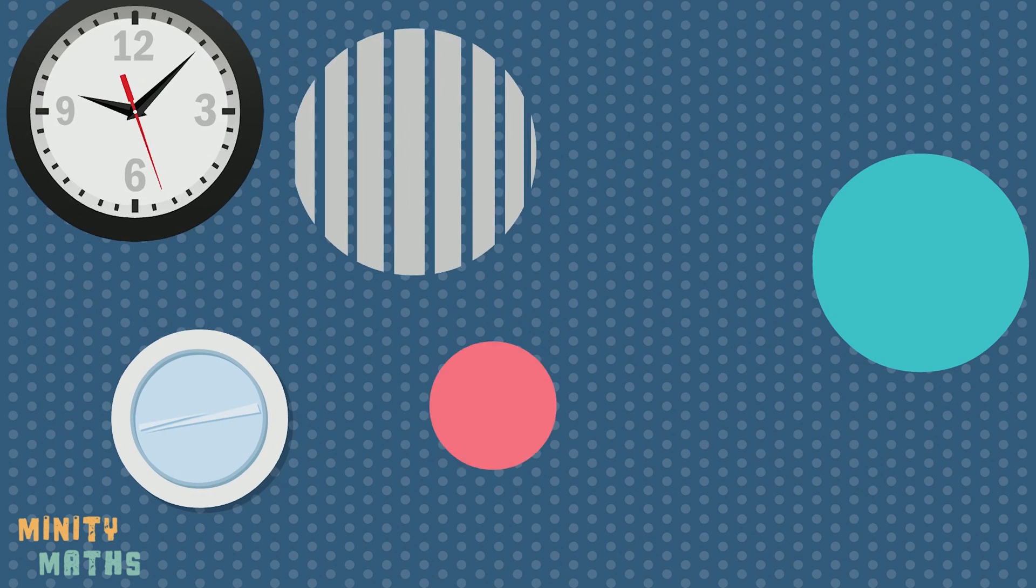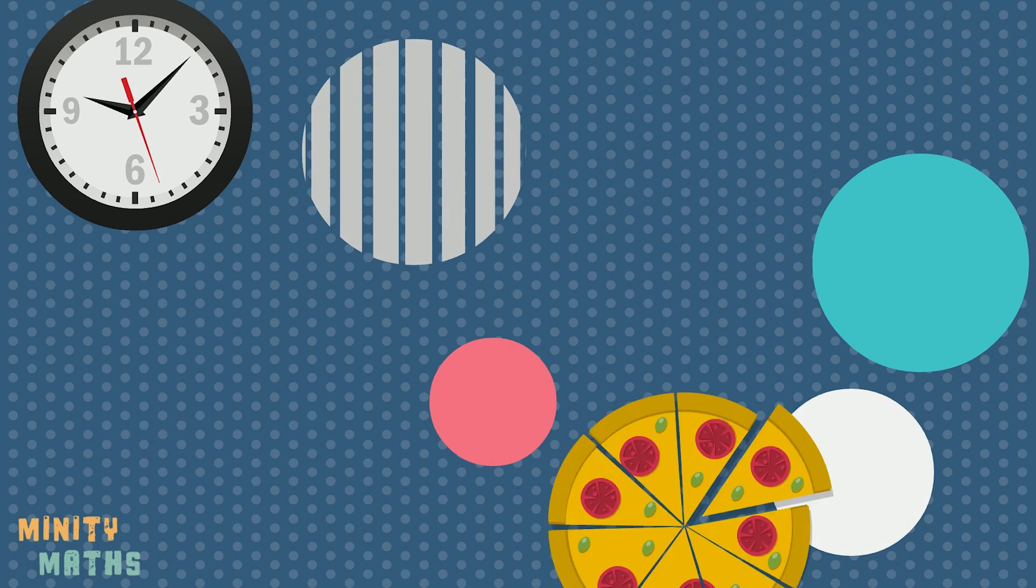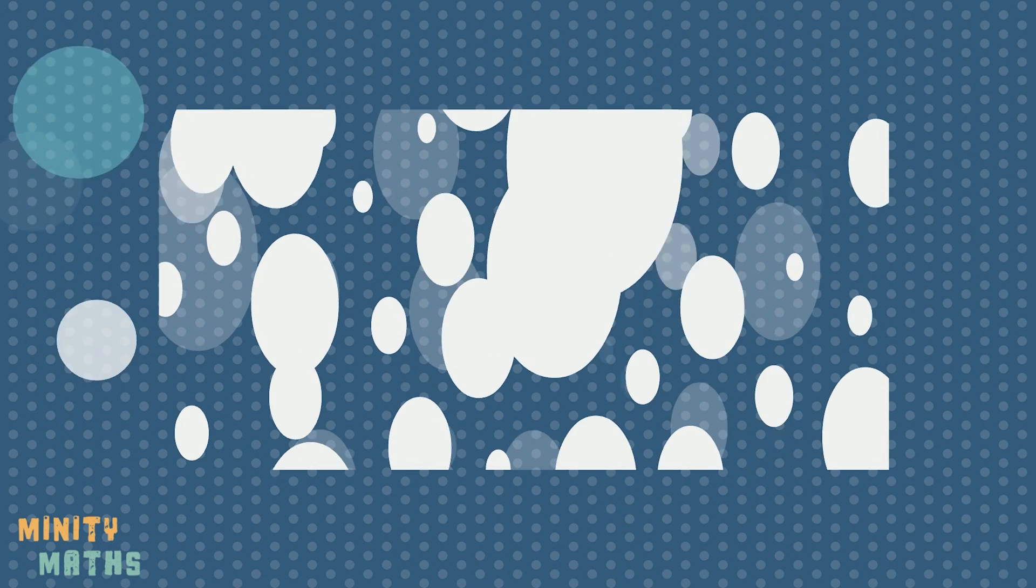This formula works for any circle, no matter how big or small. It is with this special relationship between the diameter and Pi that we can create the formula for finding the length of a circumference: Pi times diameter.